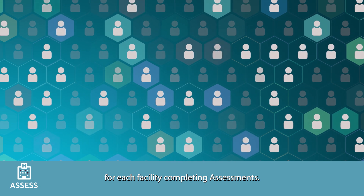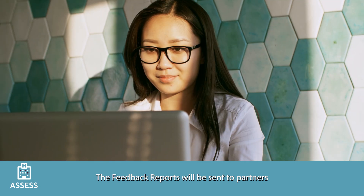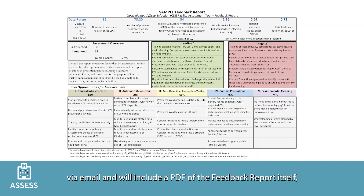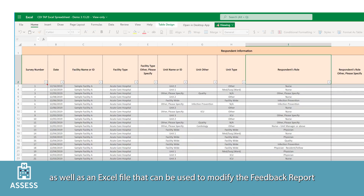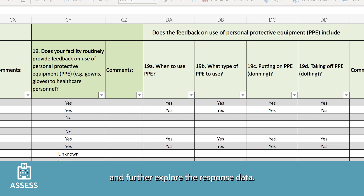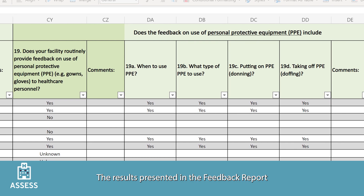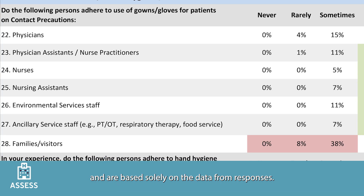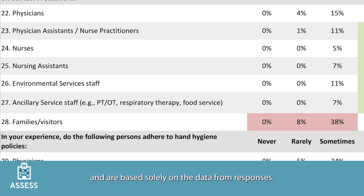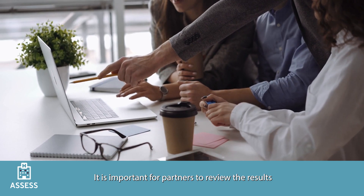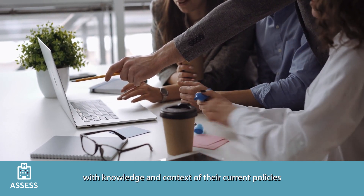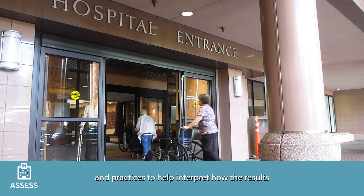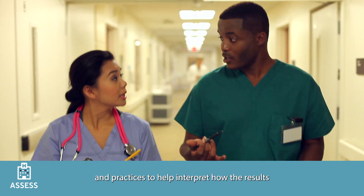CDC is available to provide customized feedback reports for each facility completing assessments. The feedback reports will be sent to partners via email and will include a PDF of the feedback report itself as well as an Excel file that can be used to modify the feedback report and further explore the response data. The results presented in the feedback report represent self-reported awareness and perceptions among facility staff and are based solely on the data from responses.